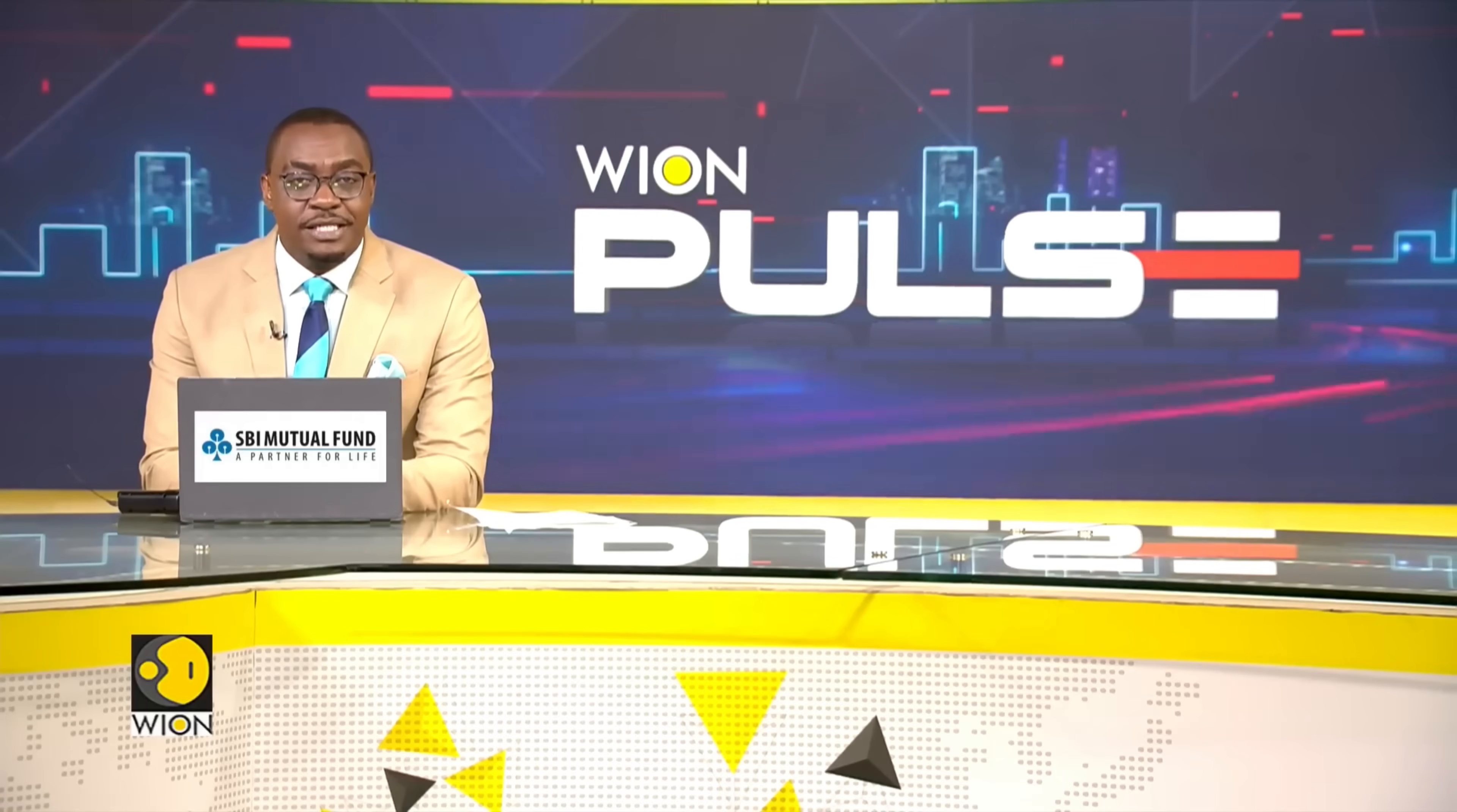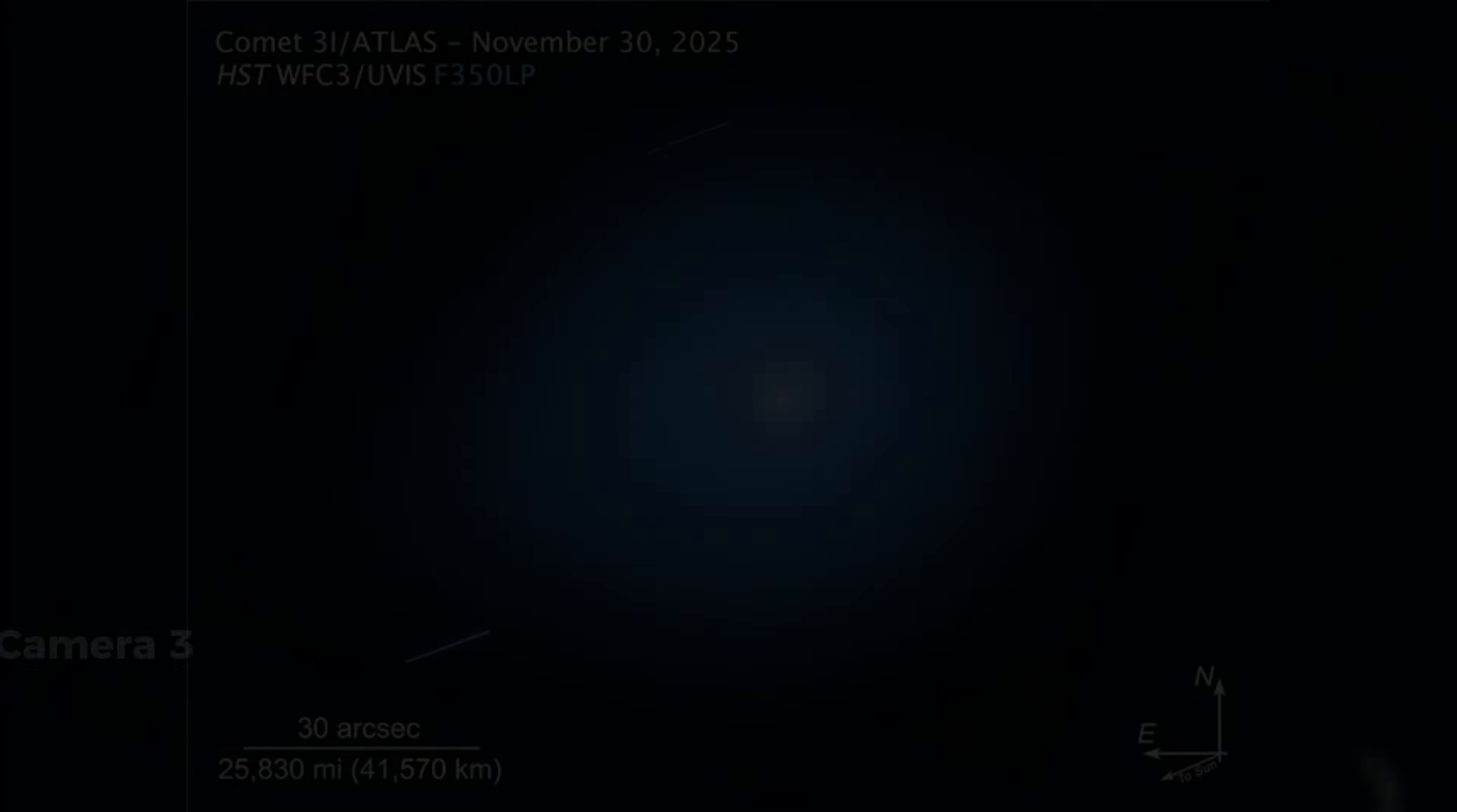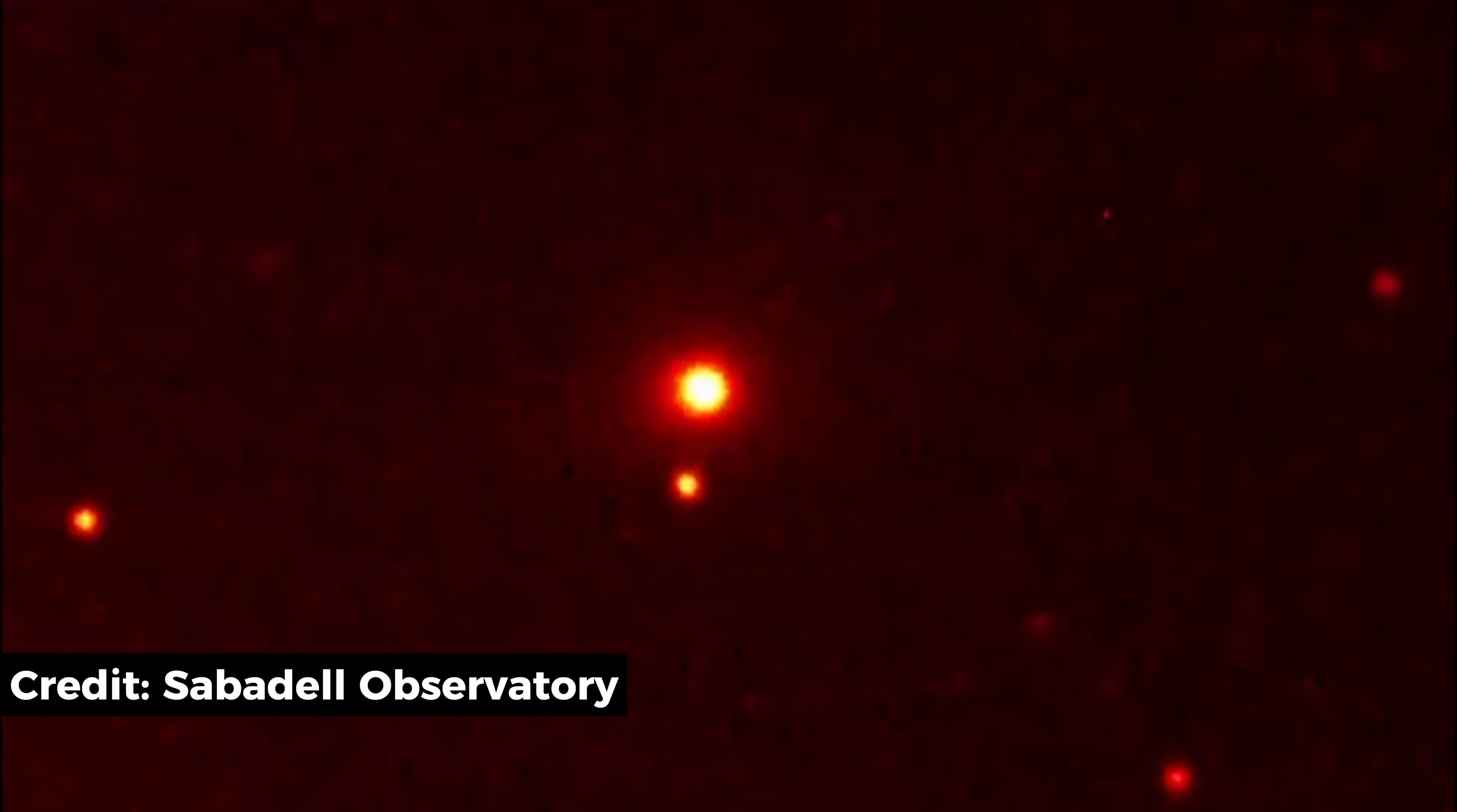And the wild telescopes are chasing it frame by frame. 3i Atlas is no longer just an interstellar comet under observation. It has become an outright challenge to the physics that define how comets behave.